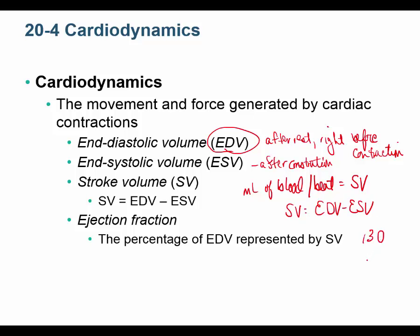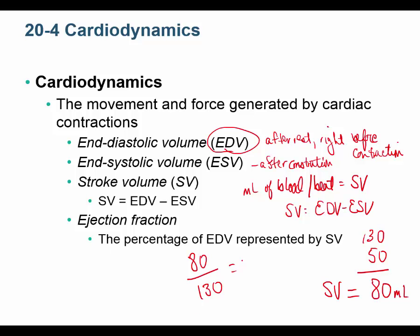Stroke volume equals end diastolic volume minus end systolic volume. For example, if we had 130 mL in the heart and 50 mL left after contraction, our stroke volume equals 80 mL. Going one step further, the ejection fraction is the fraction of blood pumped out of the total amount — in this case 61.5%, or 0.615.